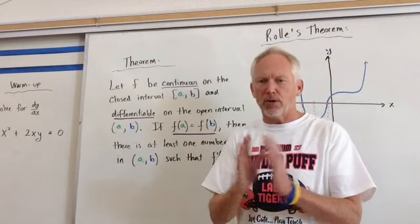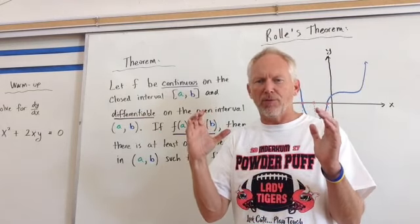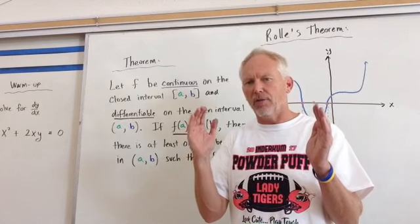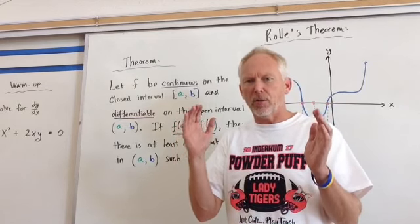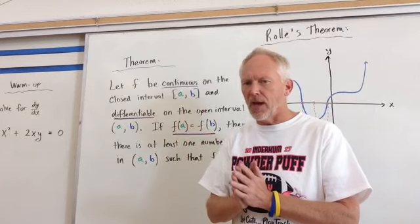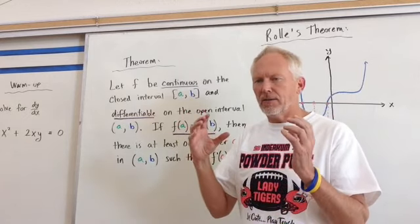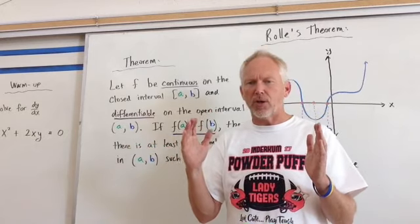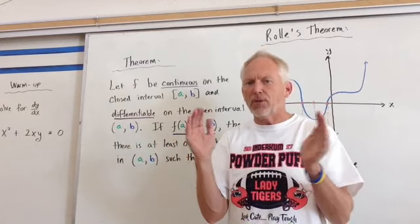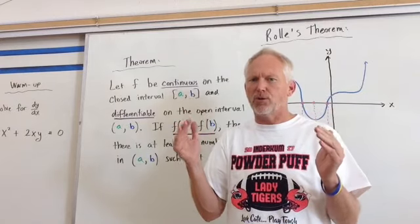Well, a closed interval is when we have numbers that we can find inclusive of our X values. So we're going to look at numbers that are inclusive of that. Then open interval is exclusive, so meaning I can go up to those numbers, but I can't use those numbers.